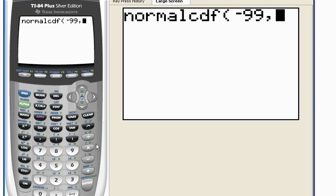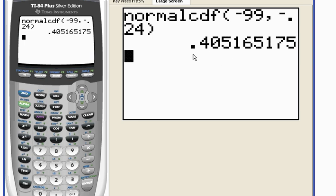My left-hand boundary is negative 99, comma. You always have to put your comma in there. And my right-hand boundary is negative 0.24. Close my parentheses, and when I hit enter, it gives me the area that is shaded.